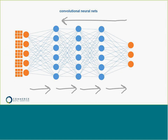Convolutional neural nets are perfect for recognizing a grid of values, making them great for image classification. A convolutional neural net takes into account a function where it looks at the input with respect to a small number of neighboring members — so if you're looking at one pixel of an image, it doesn't treat that pixel independently; it looks at that pixel and the surrounding pixels.